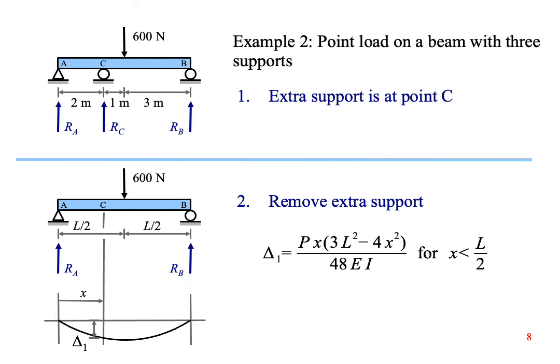Now let's look at a beam with three simple supports. The extra support is at point C. We can take away the support, then find the equation for deflection of a beam due to a point load at some location X that is different from where the point load is applied. In this problem, X is two meters from the left end of the beam at point C.